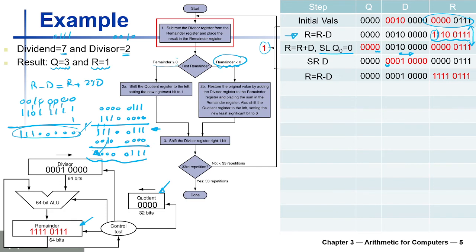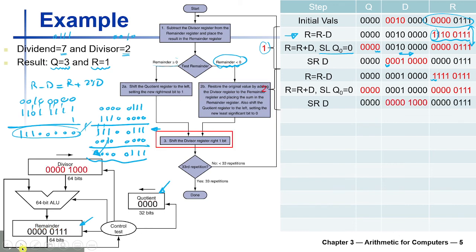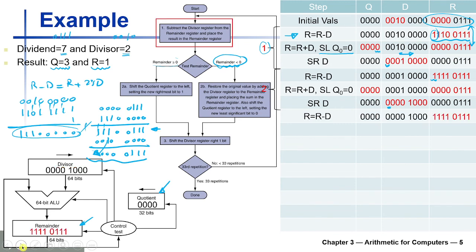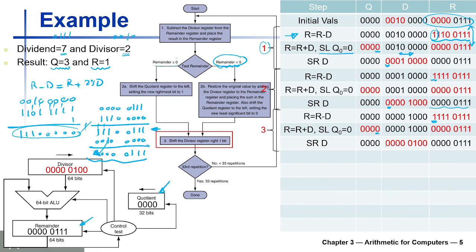We go back to the start. In the second iteration: subtract the divisor from the remainder — the sign bit is negative, so we restore the old value, shift the quotient left and put a 0, then shift the divisor right and put another 0. Same result in the third iteration — still negative, so we restore, shift quotient left with 0, and shift divisor right again.